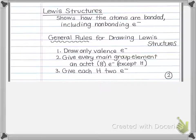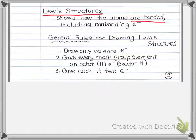Lewis structures are representations of molecules that form covalent bonds. They show us how atoms are bonded — whether there are single bonds or double bonds, and how many non-bonding electrons each atom has. We can use patterns in the periodic table to understand how many bonds and non-bonding electrons each element would have, and there's also a general guide you can follow to help you draw a Lewis structure.